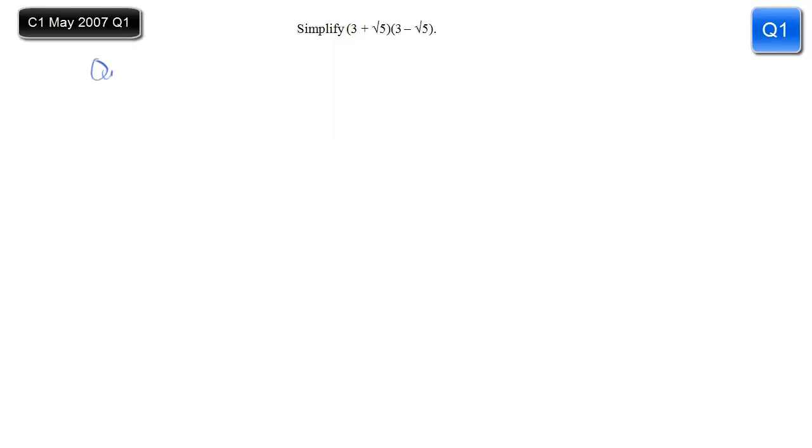Right, let's simplify this: 3 plus root 5 times 3 minus root 5. Now the quick way is to recognize the shape of this, recognize what sort of thing it is. And it's the difference of two squares.